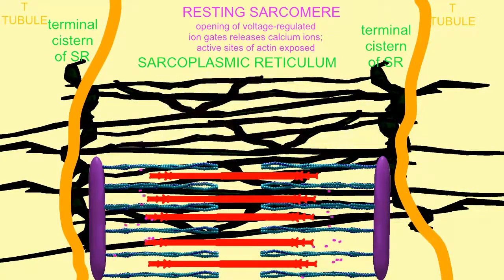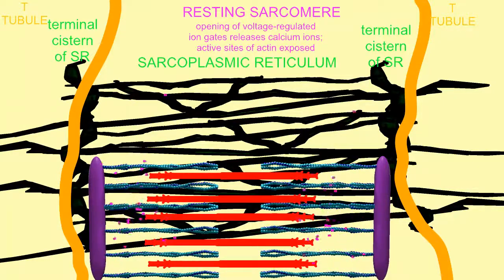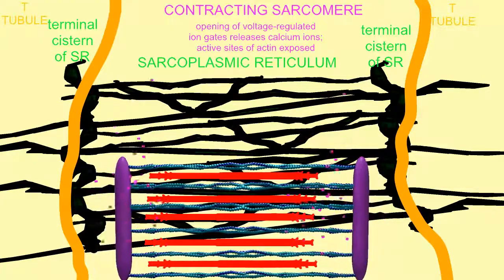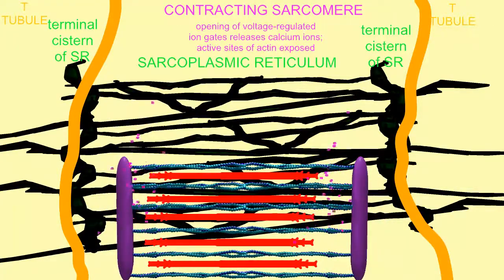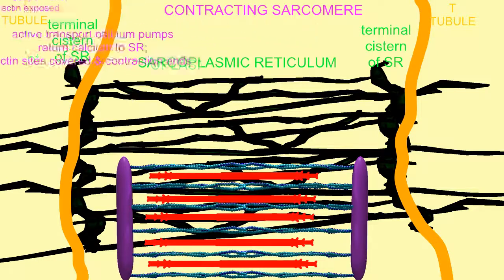This causes the release of calcium ions, and thus these calcium ions can bind to troponin, move tropomyosin, and allow the globular heads to attach and pivot on the active sites of actin molecules.